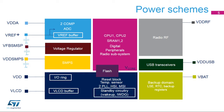STM32WB features several independent supplies for peripherals: VDDA for the analog peripherals, VDDUSB for the USB transceiver, and VDDRF for the radio. The VLCD for LCD drivers can be generated internally or come from an external supply. The internal reference voltage used by the analog block can be output on the VREF+ pin to supply external circuitry. A backup battery can be connected to the VBAT pin to supply the backup domain.